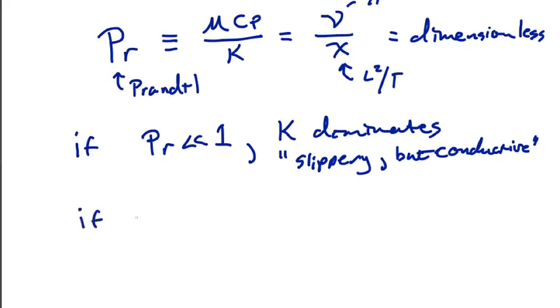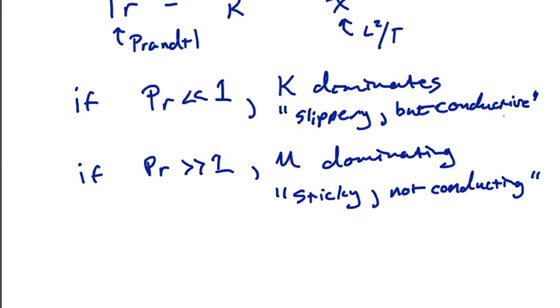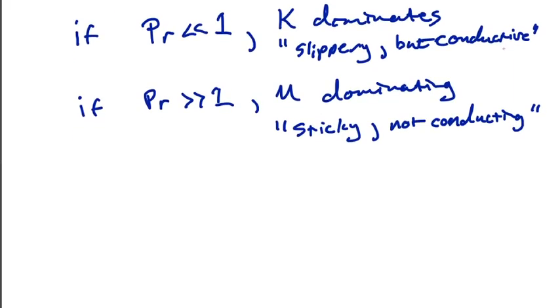Conversely, if the Prandtl number is very large, much, much greater than one, then we have the momentum diffusivity dominating, and now we have like a sticky fluid that's not good at conducting. So what that means is that the flow might, it's sticky, the flow will come to a stop very quickly, but it might not thermally equilibrate on the same time scale as it comes to a stop. So you might bring like a cold blob into your system and the blob will stop moving very, very quickly, but the cold blob will stay cold relative to the surroundings. So that's a little intuition of what the Prandtl number might be telling us.